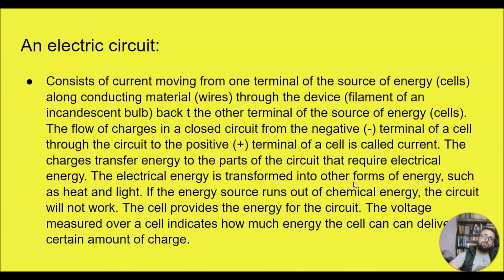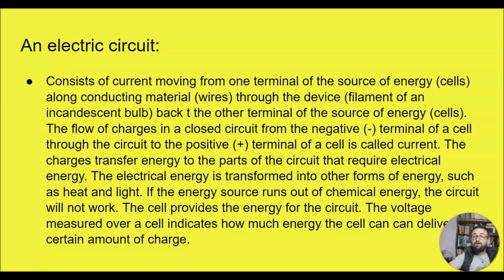An electric circuit consists of current moving from one terminal of the source of energy — your cells — along conducting material, your wires, through a device such as the filament of an incandescent bulb, and back to the other terminal of the source. The flow of charges in a closed circuit is from the negative terminal of a cell through the circuit to the positive terminal, and this is called current.